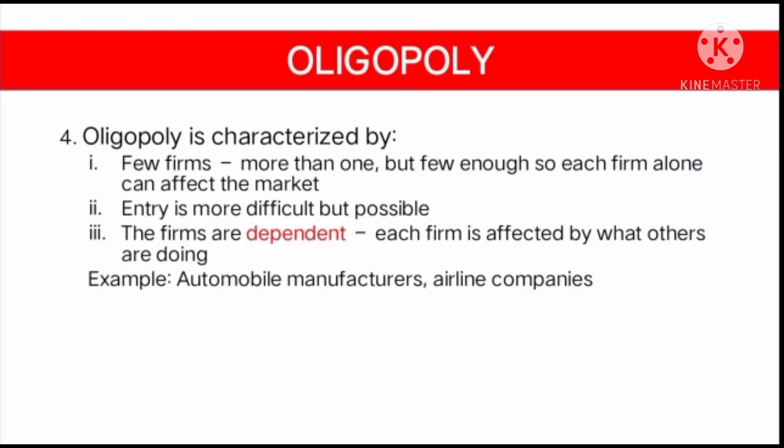Oligopoly is characterized by: number one, few firms — or more than one, but few enough so each firm alone can affect the market. Number two, entry is more difficult but possible.